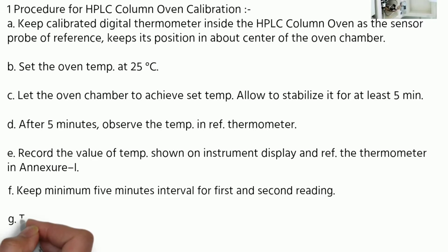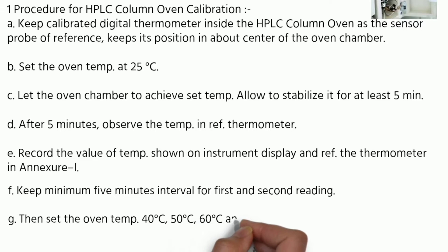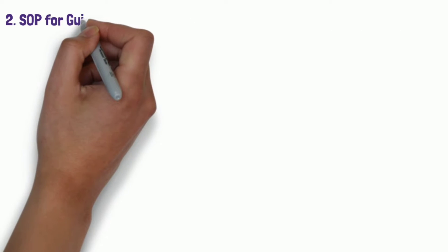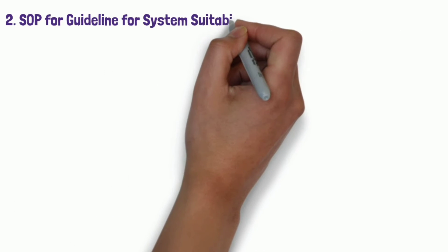Then set the oven temperature 40 degrees Celsius, 50 degrees Celsius, 60 degrees Celsius, and 70 degrees Celsius, each one by one, and follow the procedure as mentioned in step C2F. Then SOP for guideline for system suitability test for HPLC analysis.